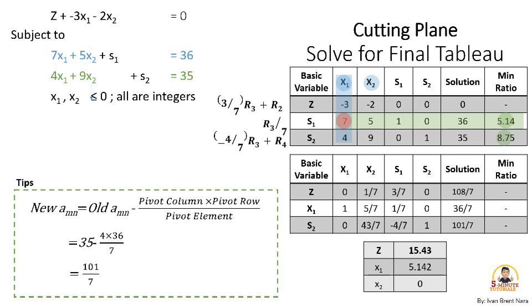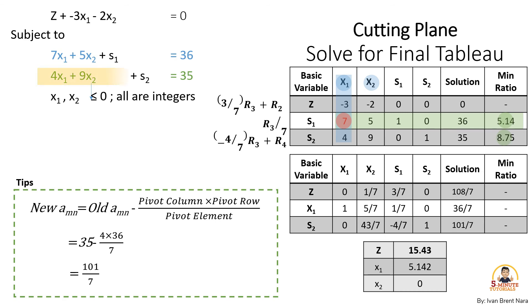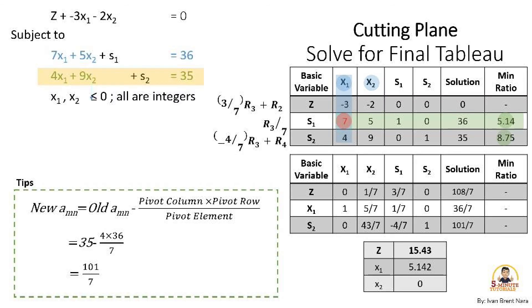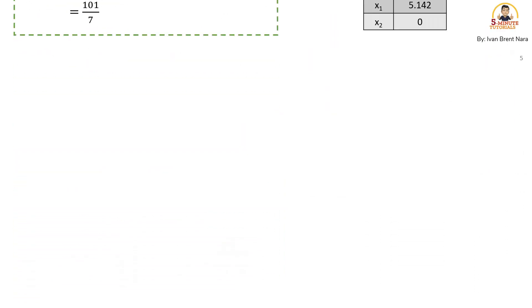Also, the slack variable x₂ is 101/7 or 14.428 which satisfies the second constraints that 4 times 5.142 plus 9 times x₂ equals 0 is equal to 35.